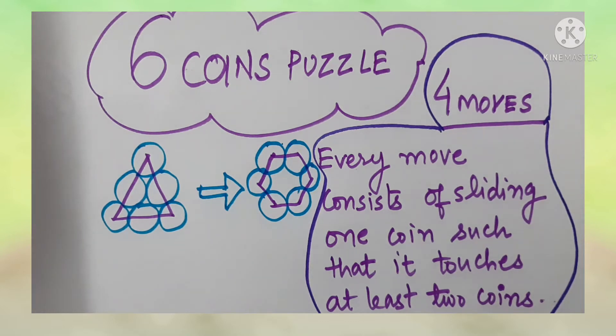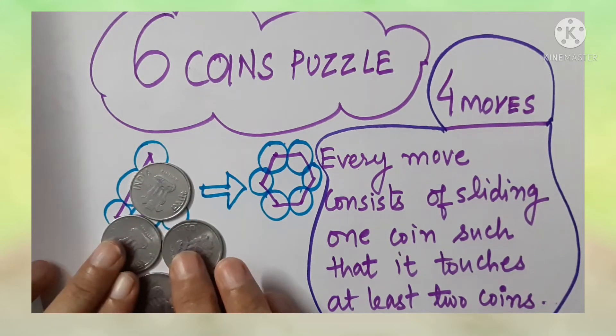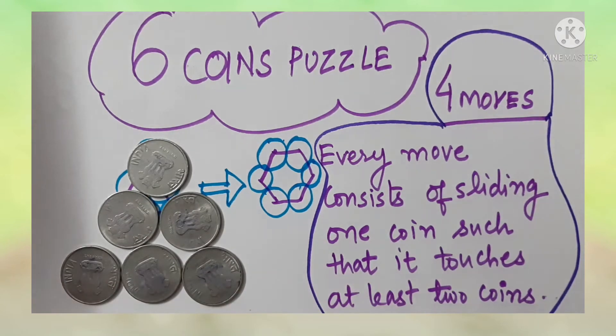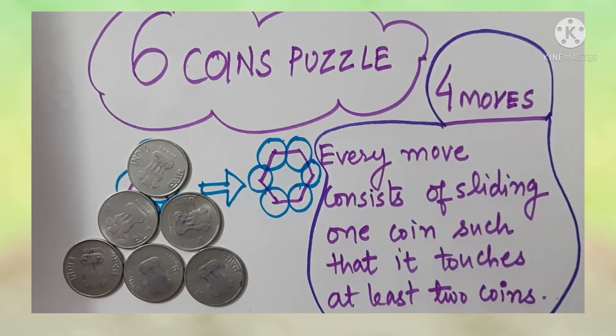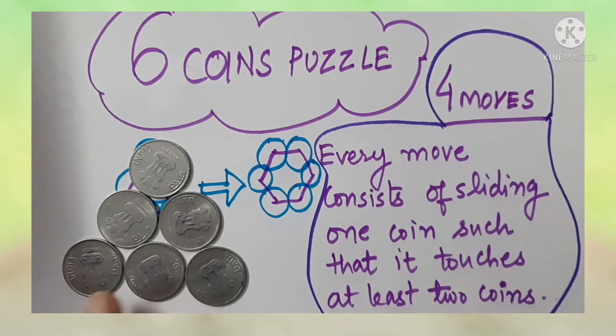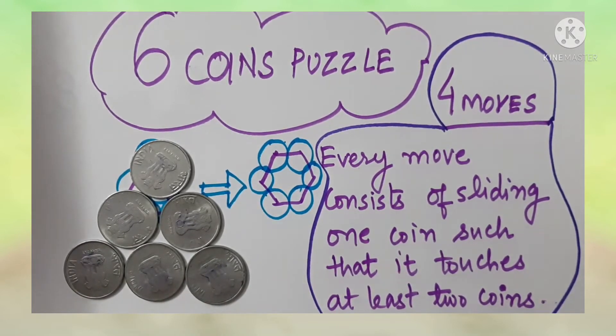Take six coins and arrange them in the form of a triangle and then try to make a hexagon out of it. You can see that I have made a triangle with the help of six coins and each coin is touching at least two points. I hope you are trying. Okay, let us see how to solve this.